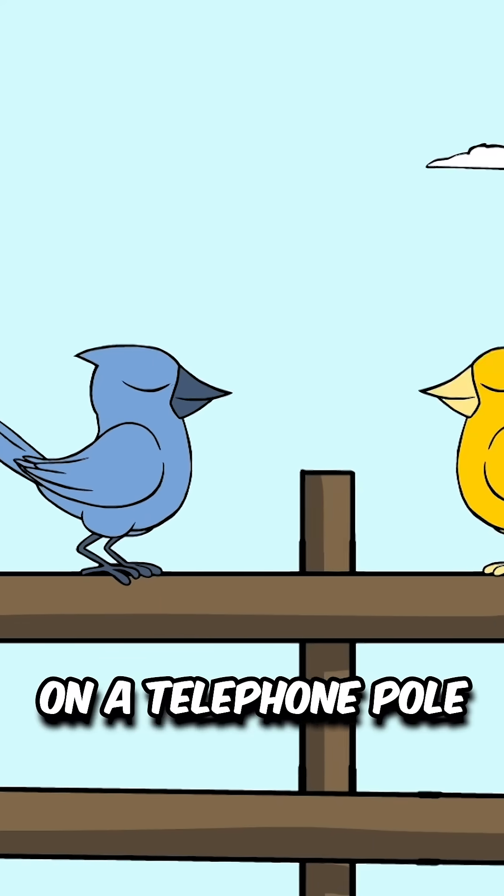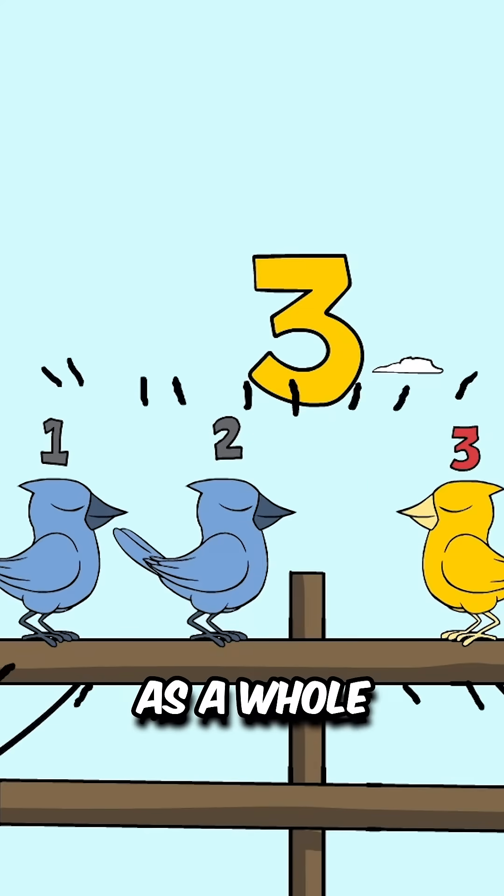Three birds were on a telephone pole. The denominator three was the group as a whole.